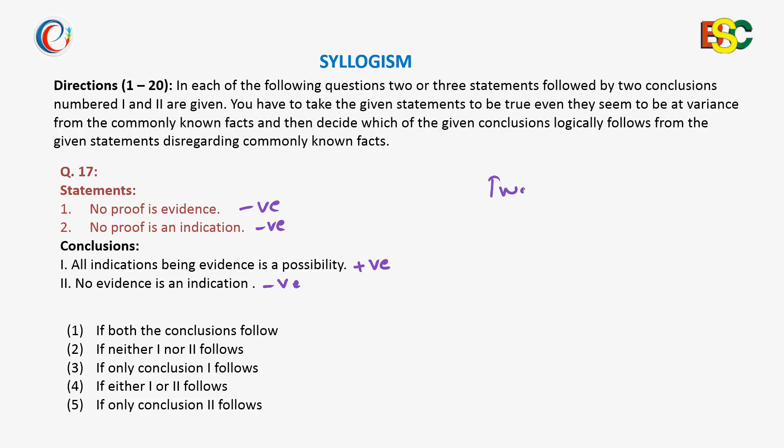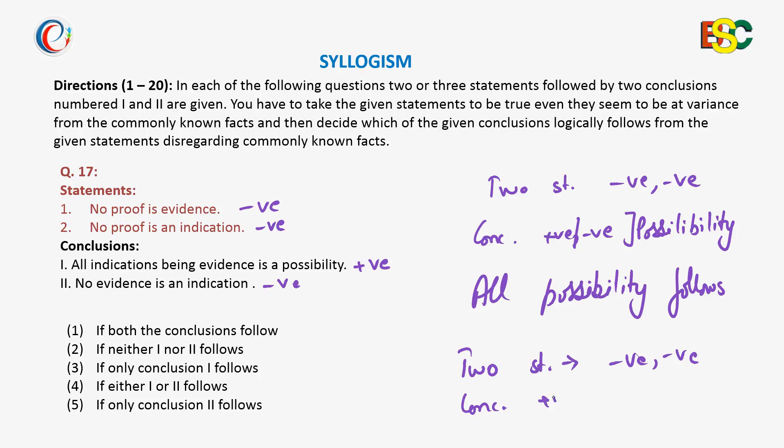Now we know that when two statements are negative and the conclusion is positive or negative with the possibility case, then all possibility follows. But if two statements are negative and the conclusion is whether positive or negative without possibility, then all conclusions do not follow.